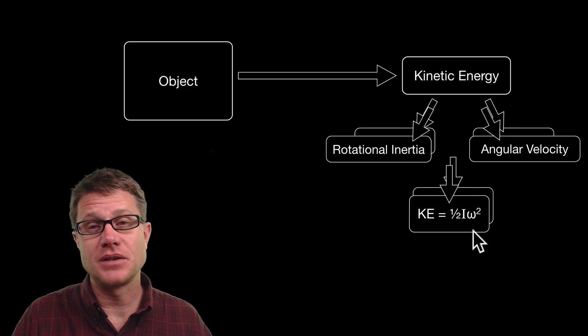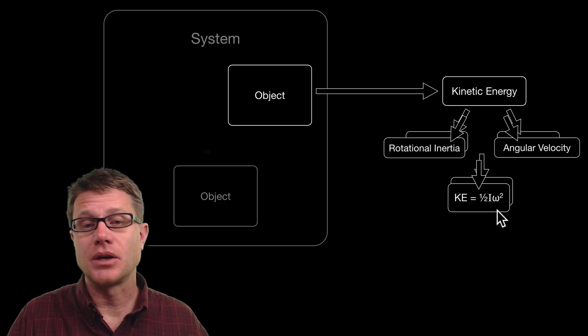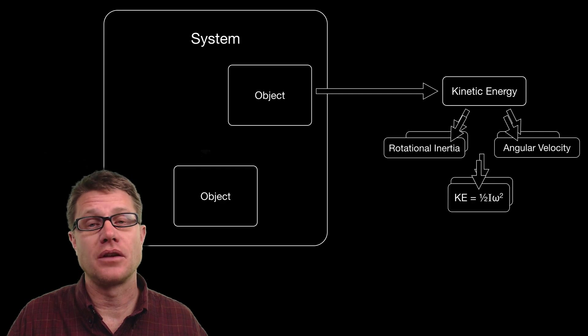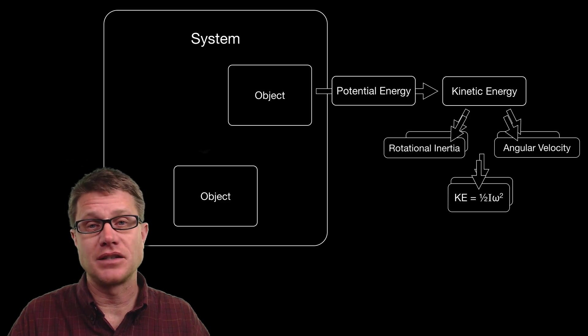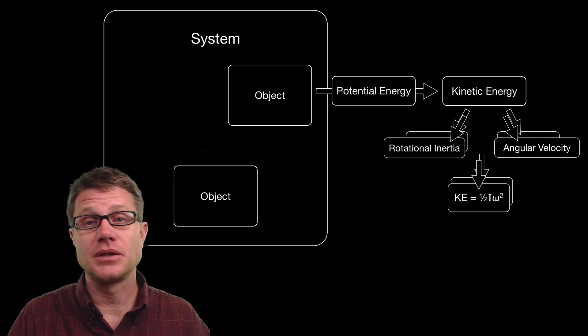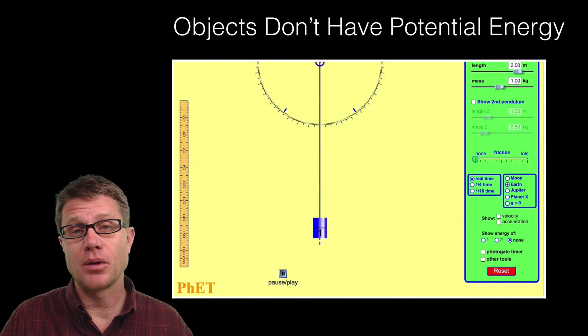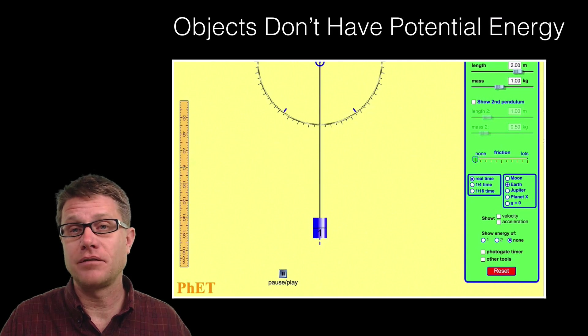But remember this does not have potential energy if it is in motion. We can only have potential energy if there is another object or another part of this system. Then it can have potential energy. It could be gravitational. It could be electric potential energy. But remember objects by themselves do not have potential energy.